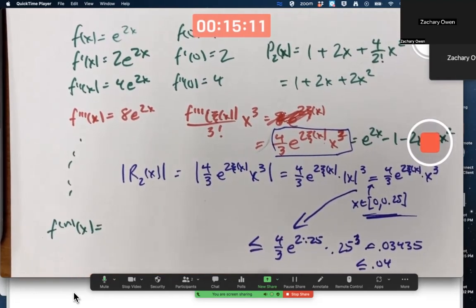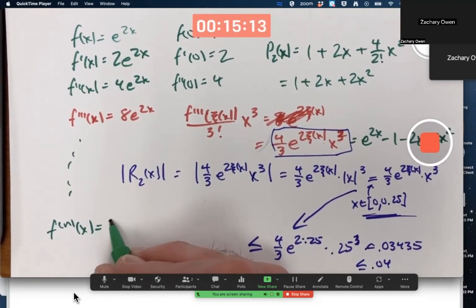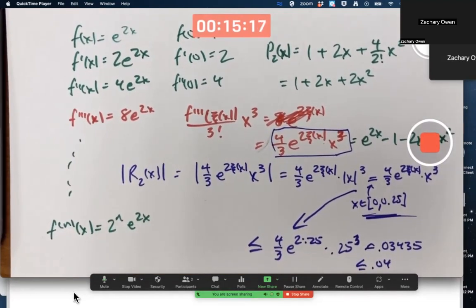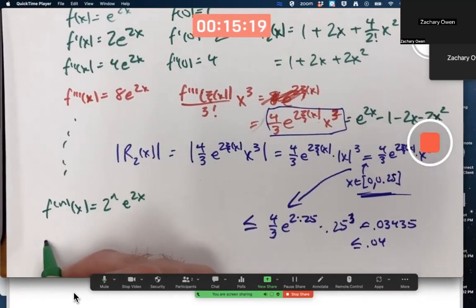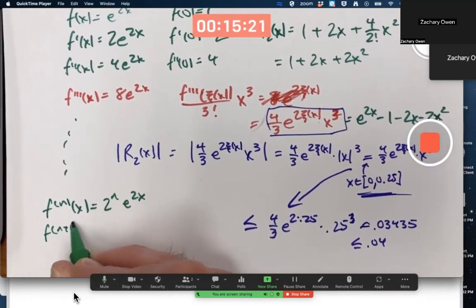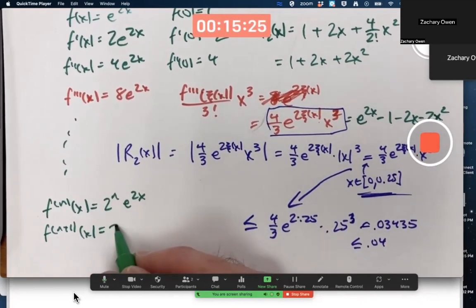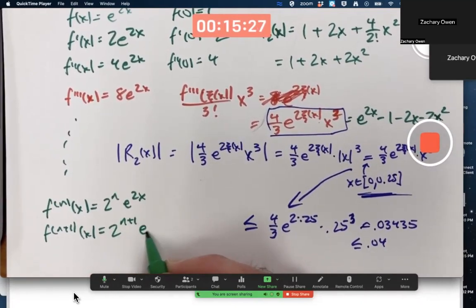If we look at the pattern there, it looks like it's 2 to the nth power times e to the 2x. And that would also, by the way, mean the n plus first derivative, which we'll need with Taylor's theorem, is 2 to the n plus 1 times e to the 2x.